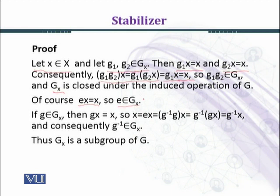Now we want to prove the existence of inverse of every element of GX in GX. So if g belongs to GX, then gx equals x. This condition will be satisfied because g belongs to GX, so x equals x. Now we are multiplying g inverse on both sides.